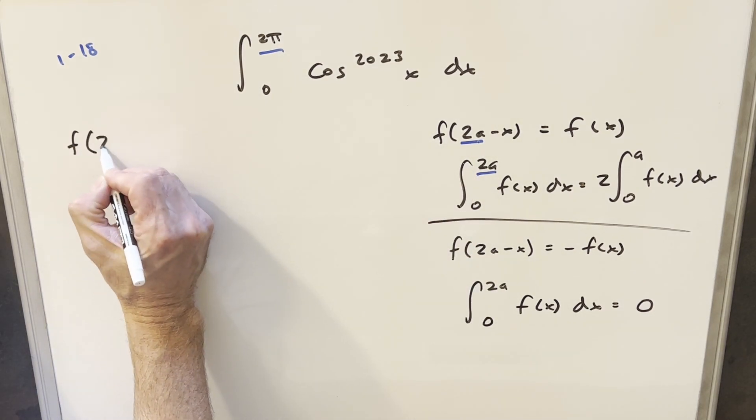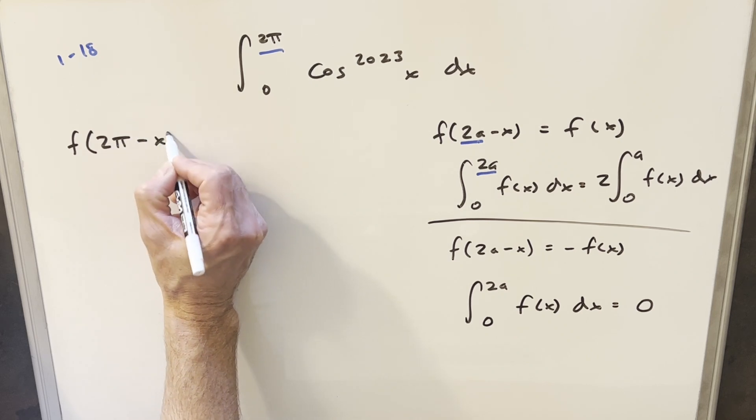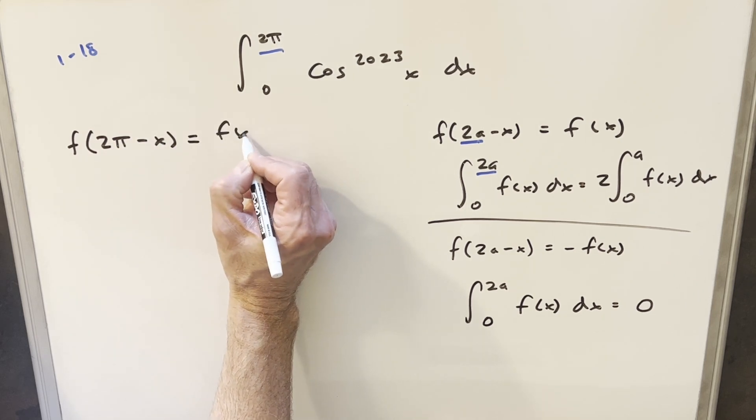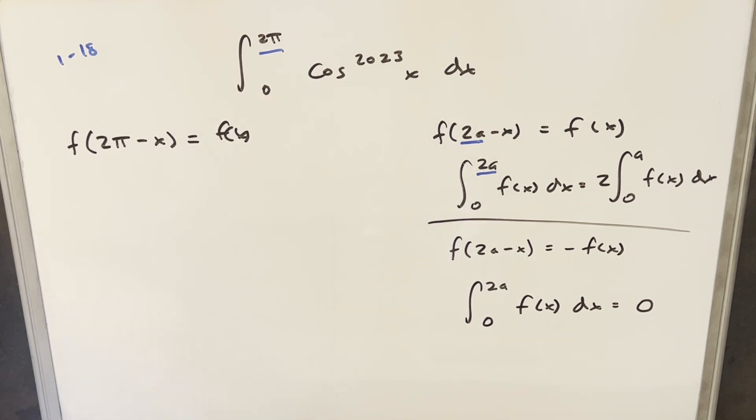We want to check that f of 2π minus x is going to be equal to f of x, and our f of x is just this cosine of 2023 x. And so, what I want to do is just plug my 2π minus x into cosine 2023, but really I think the key is just going to be the cosine of x. So, let's just look at what happens when we have cosine of 2π minus x.